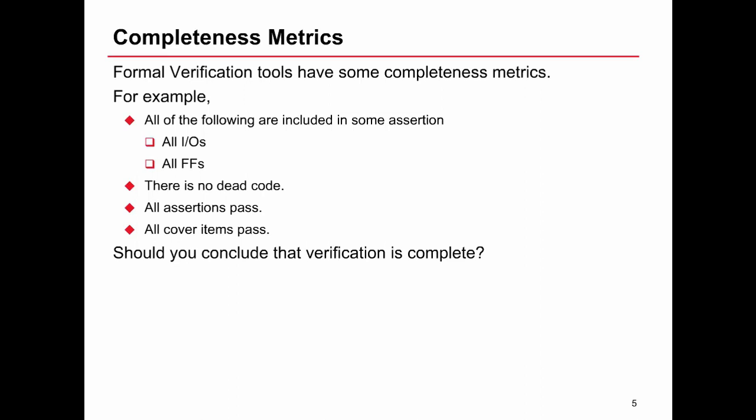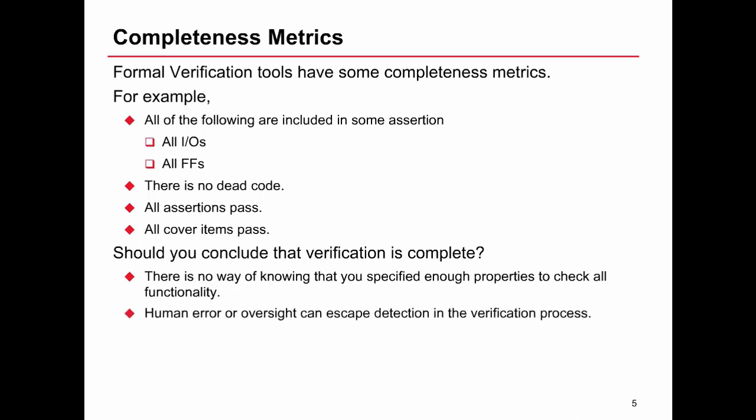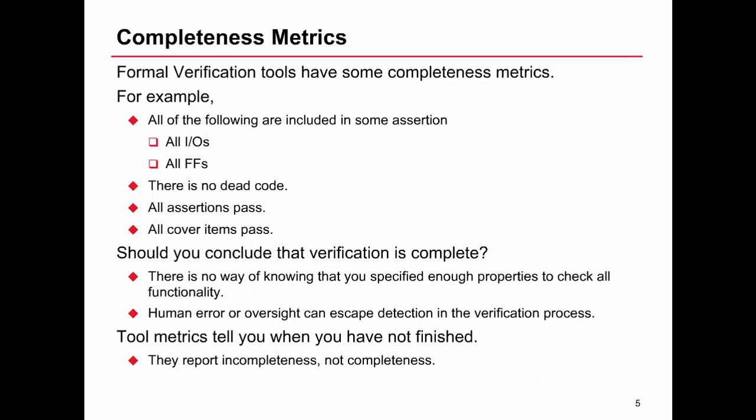Should we conclude verification's complete if all of those give positive indications? Well, there's still no way of knowing that you specified enough properties to check all functionality. So human error or oversight can escape detection in the verification process. The tool metrics we've described will tell you when you have not finished, so you know for sure you haven't finished yet, but that's not the same thing as knowing that you've written enough. So the report you get is incompleteness, not completeness.